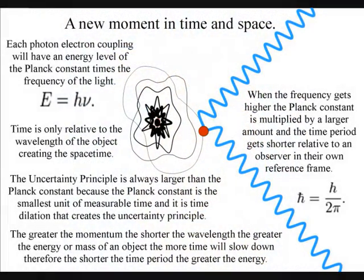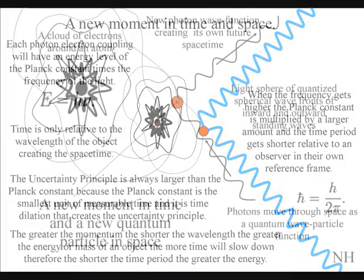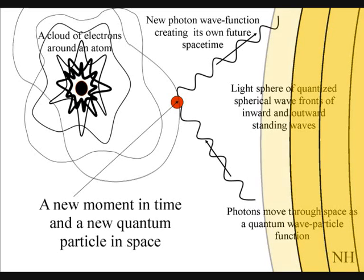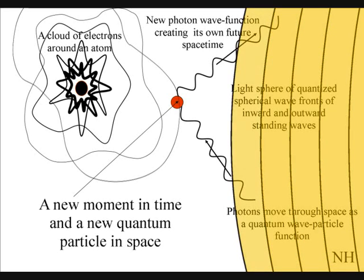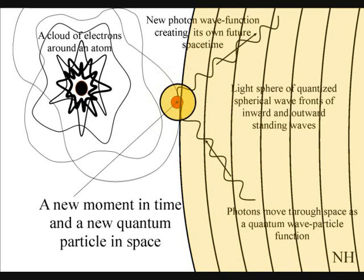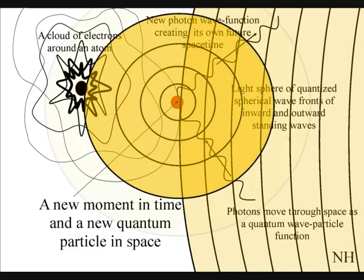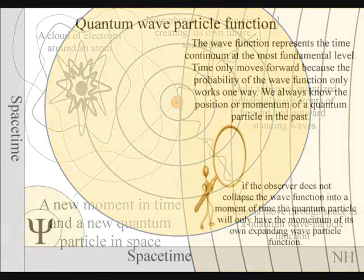Each atom radiates out light spheres of quantized wavefronts. Each wavefront will create a probability of a future event. When a wavefront comes in contact with the electrons on the surface of another atom, it will create a new moment in time and space in the form of a photon-electron coupling. This has nothing to do with consciousness. All atoms create their own spacetime geometry.